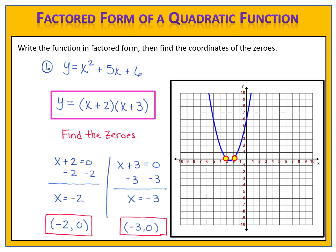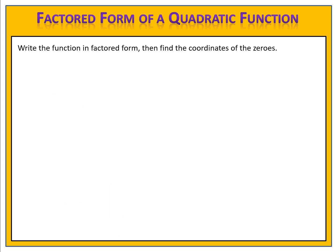We can find the x-intercepts or zeros by simply using a skill we're already familiar with — that of factoring. Exercise 2 is for you to try. Can you write this function in factored form, and then use that to identify the coordinates of the zeros? Please pause the video here and come back when you're ready to check your answer.